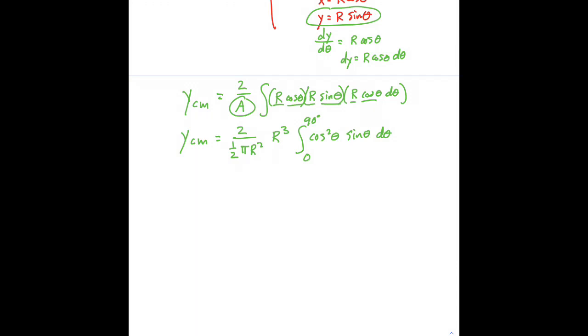And this is a case for u substitution. If we let u equal cosine theta, then du is negative sine theta dθ. So let's see what that leads us to.